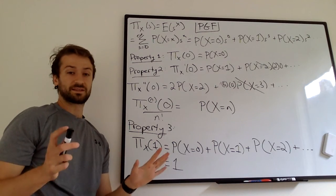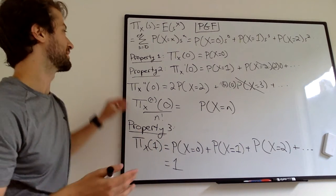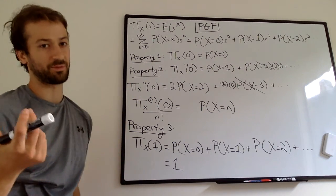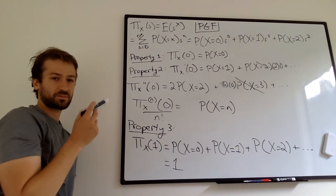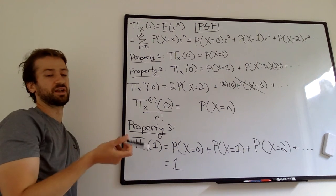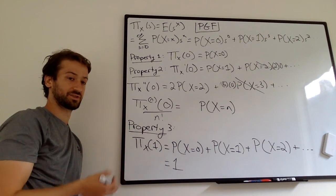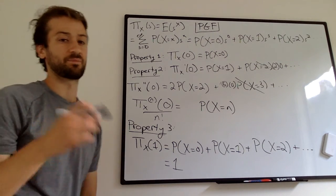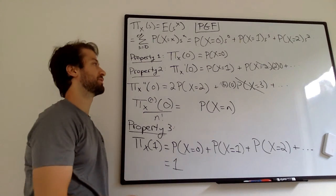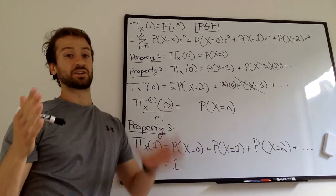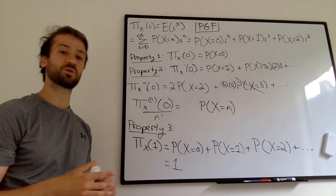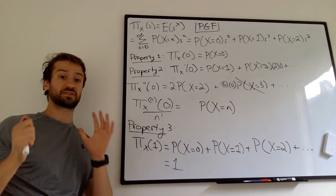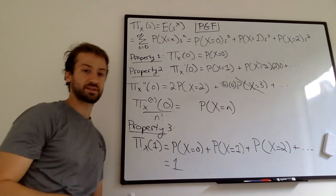So in this video we introduced PGFs and talked about three cool properties. Properties one and three are more diagnostic — they tell you if your PGF is valid. Property two can be very useful for actually generating the probabilities from a PGF by taking derivatives. All in all, this is a step in our journey toward exploring branching processes more deeply. In the next video, we're going to talk more about how PGFs can actually help us explore branching processes. See you next time.